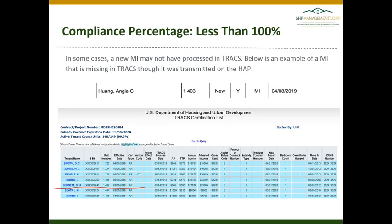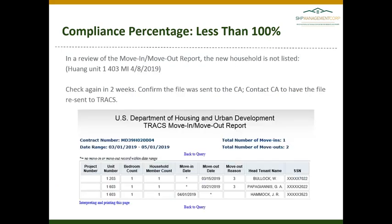Below is an example of a move-in that is missing in TRACS — it was transmitted on the HAP for unit 1403. However, when looking at the TRACS certification list, there is no unit 1403 listed as an active household. In a review of the move-in/move-out report, this new household is not listed, so this certification has not yet hit TRACS. It is possible the CA has it and is still processing the certification. We suggest checking back in two weeks to see if it has been processed, if this was transmitted with the most recent HAP request. If it was transmitted prior to the most recent HAP request, you will need to contact your CA to have them transmit that certification to TRACS.